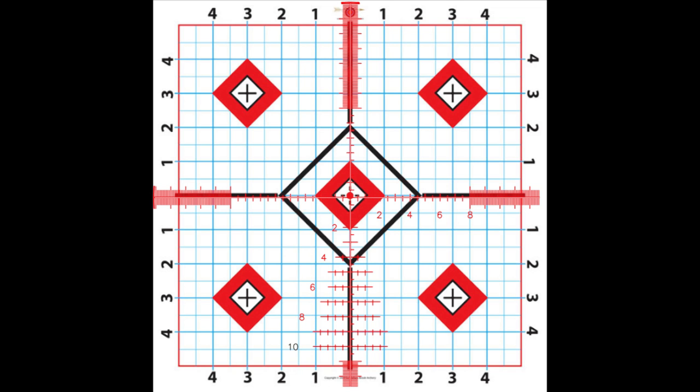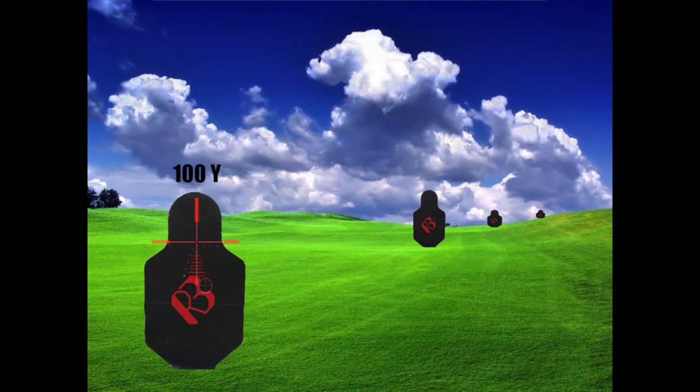Now we're going to take a look at using first focal plane in the field with targets at varying distances. On this stage, we have targets at 100, 200, 800, and 1100 yards.